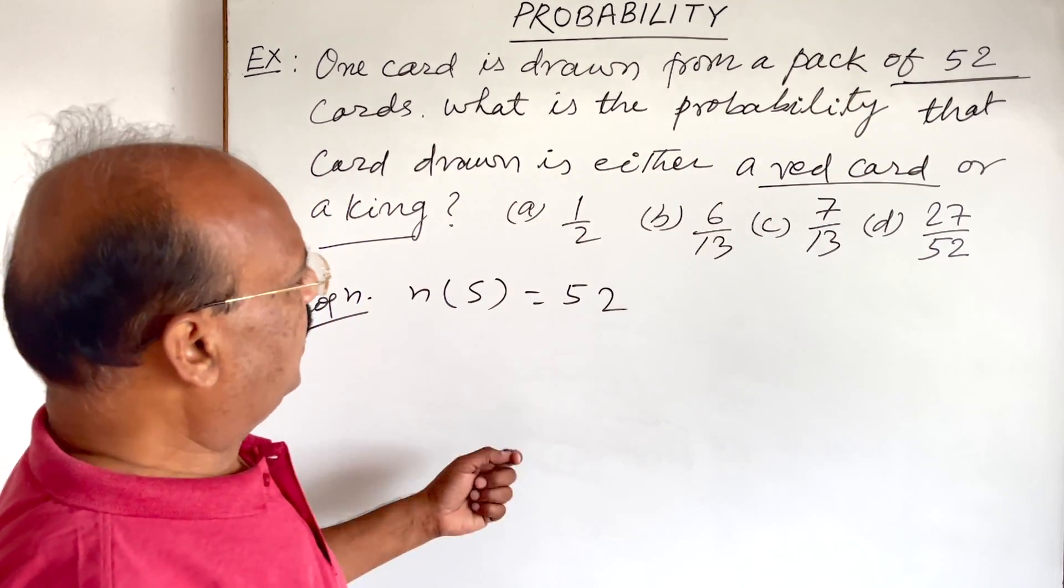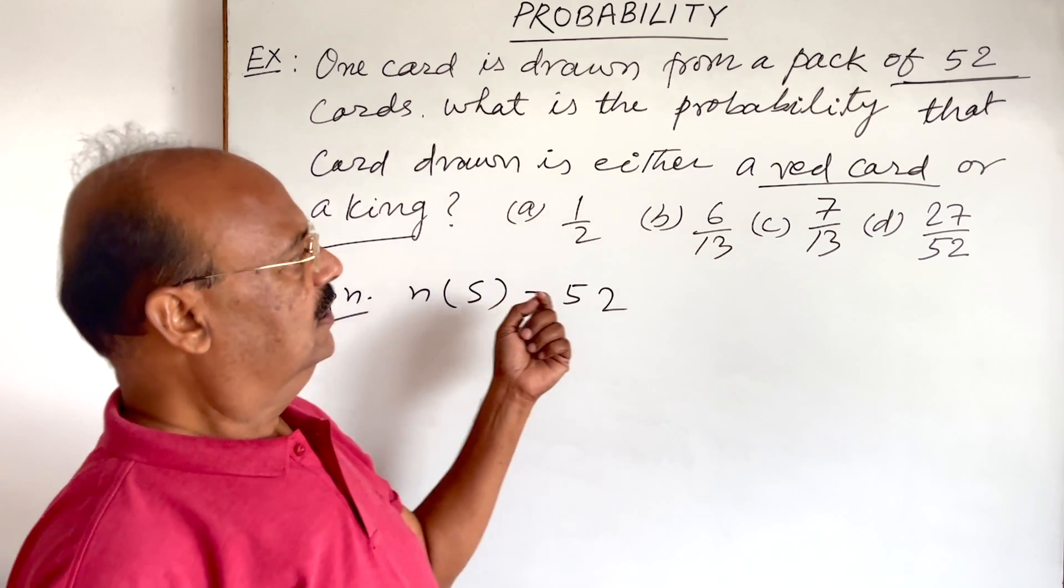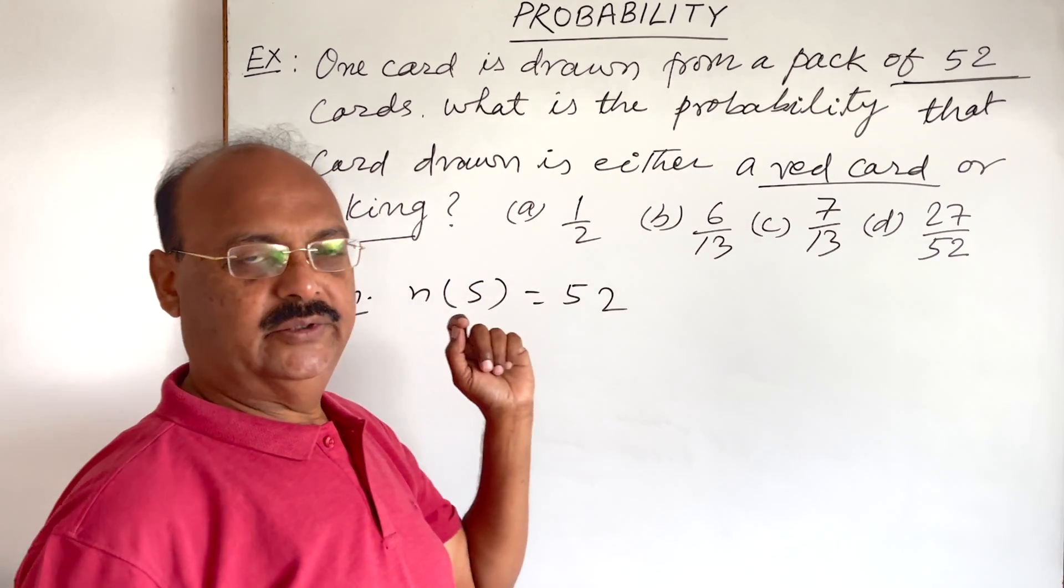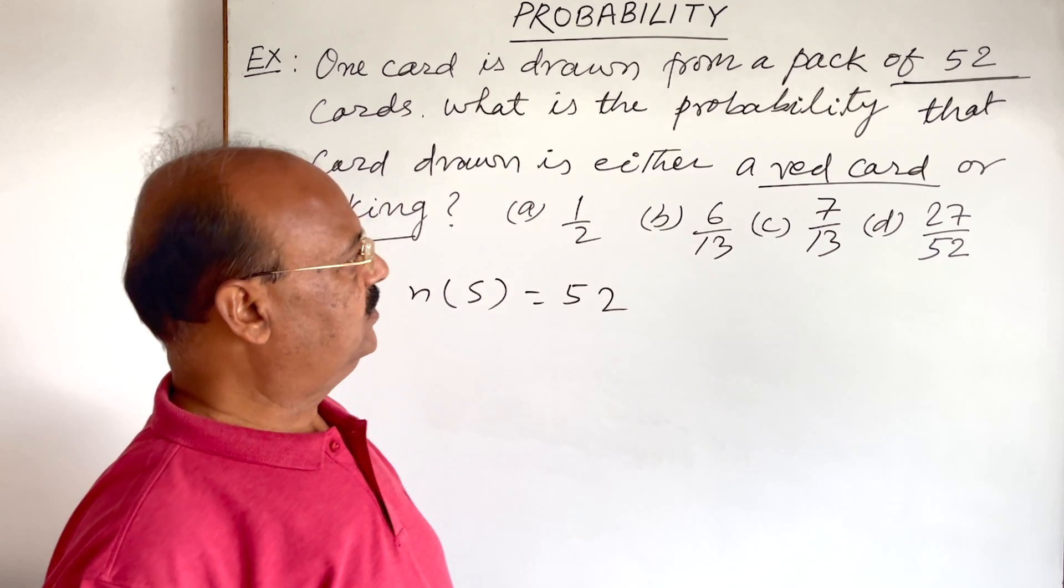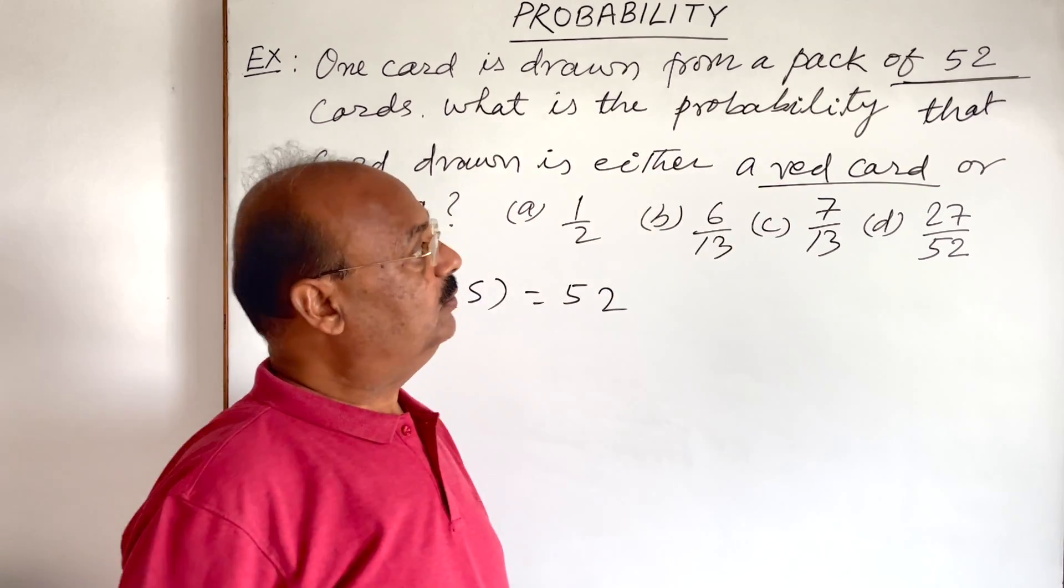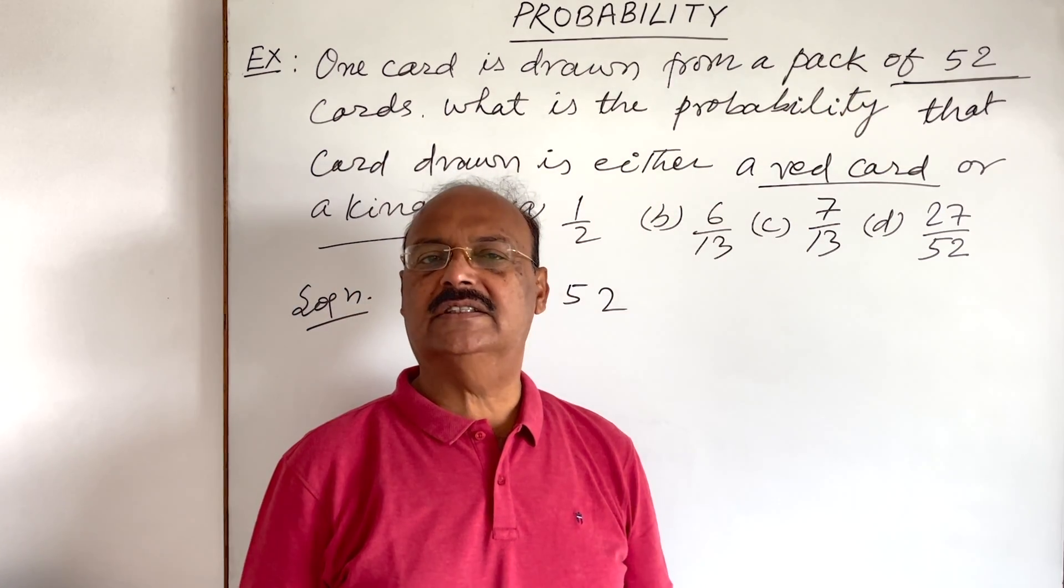And secondly, one card has been drawn and the card is either a red card or a king. We have to find out the probability of the card so that it is red or a king. So out of these 52 cards, we know that there are 26 red cards.